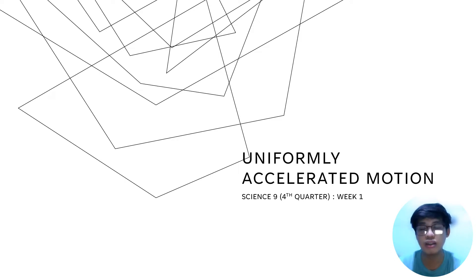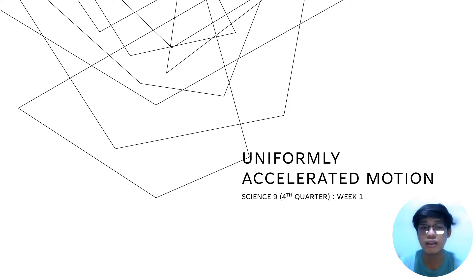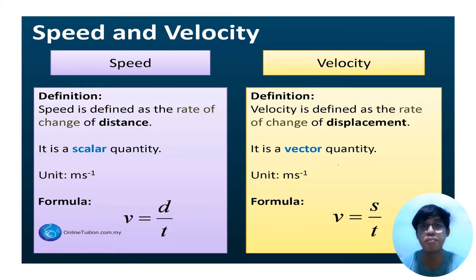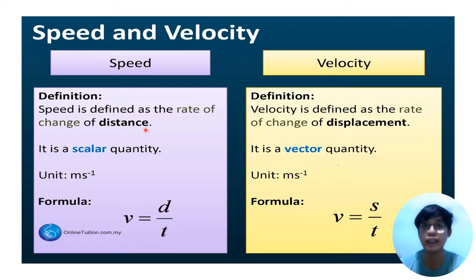Good day everyone. Today's lesson is uniformly accelerated motion, the first topic in the fourth quarter for Grade 9 Science. Before we proceed, let's recall the differences between speed and velocity. Speed is defined as the rate of change of distance, while velocity is defined as the rate of change of displacement. Distance and displacement are different from each other.